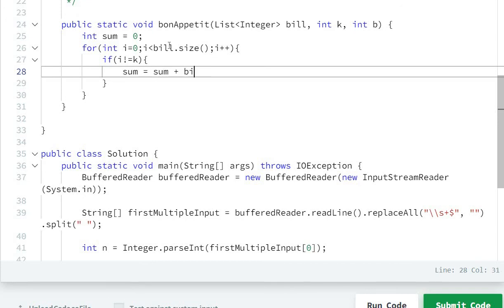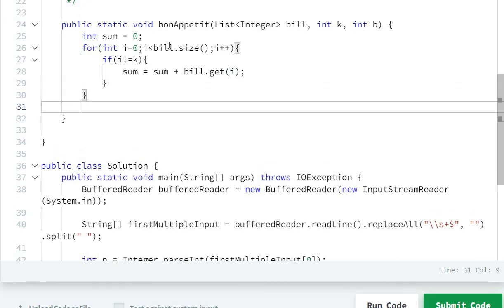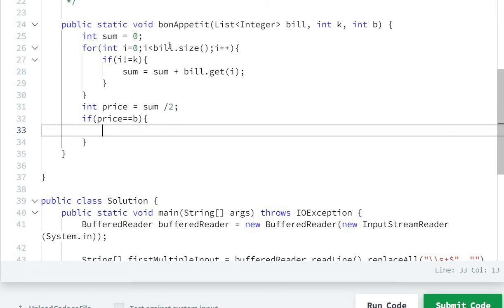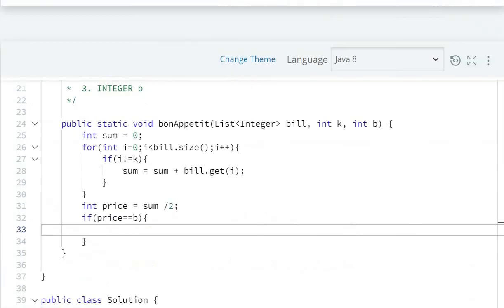And what will be the price? Int price equals sum divided by 2. Then I'll check if price equal to b, then I will print Bon Appetit.